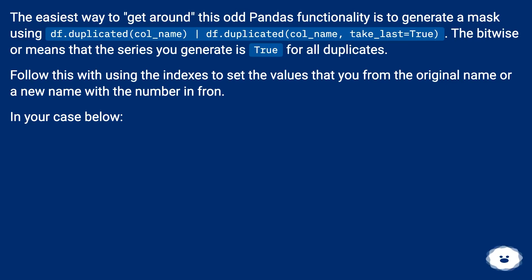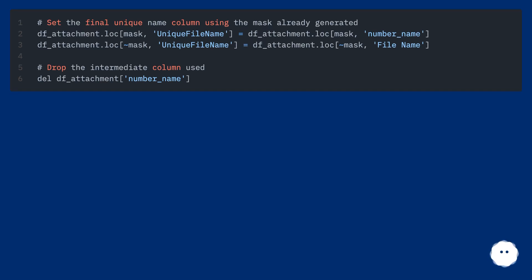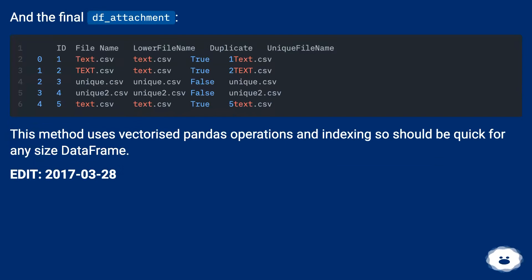Follow this with using the indexes to set the values from the original name or a new name. This method uses vectorized pandas operations and indexing, so it should be quick for any size data frame.